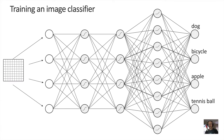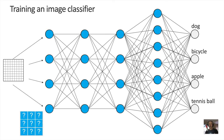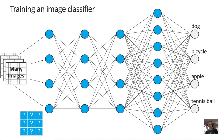Each node or circle you see in the neural network is a transformation of its input images, determined by a grid of weights. The trick to training a neural network is to choose those weights so that the right numbers come out at the end. We do that with training data — lots of images of dogs, bicycles, apples, and tennis balls that a human has labeled or annotated. All we do is pick weights such that the correct node gets the largest value in each case.